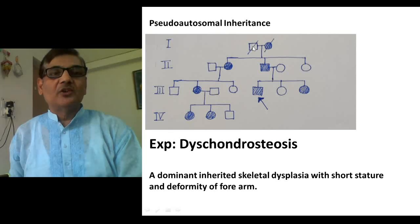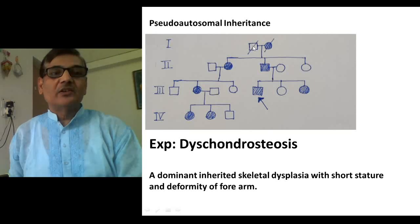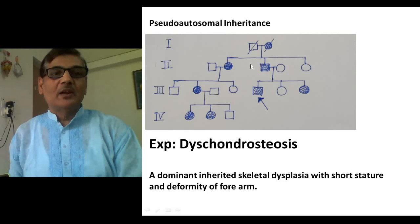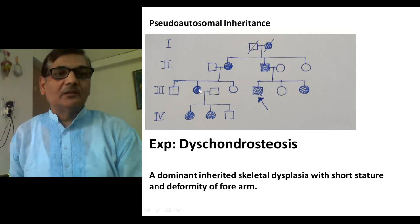In the first generation, the parents are present, and the female was actually suffering from dyschondrosteosis. She carried two X chromosomes and one of her X chromosomes was carrying the mutant allele. She passed this disease to the next generation, where this couple had three children. The first child was a female, then a male child, followed by another female — two of them were sufferers and showed the trait. This female may have received the X chromosome containing the mutant allele, so she was suffering.